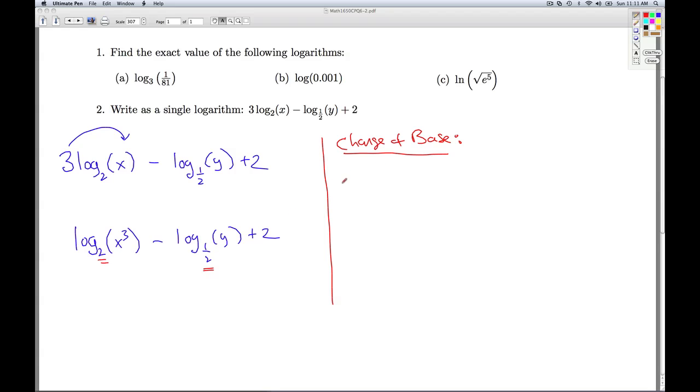So change of base says, if you've got log base a of c, where that's an inconvenient base, I can rewrite that as log base b of c over log base b of a, where b is a convenient base. So in this particular example, the unfriendly base is base 1 half. And I want to change it to log base 2. Alright, so log base 2 of y over log base 2 of a half.